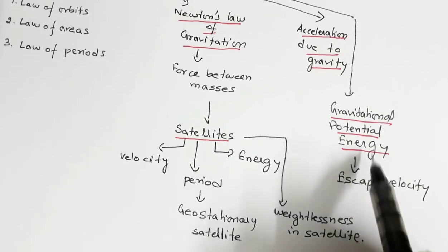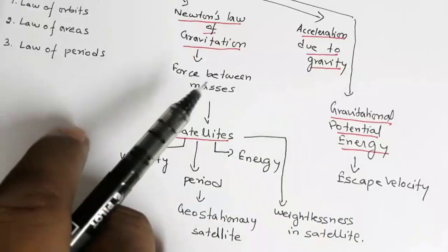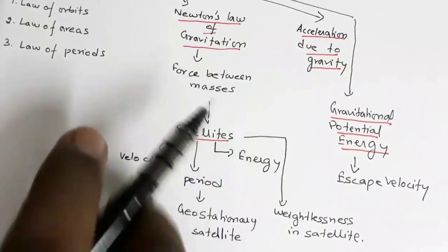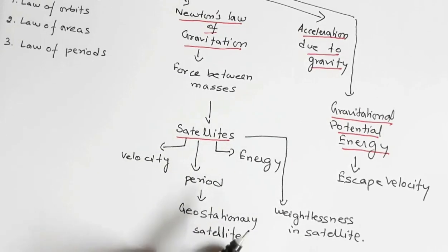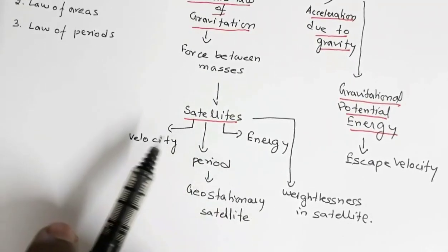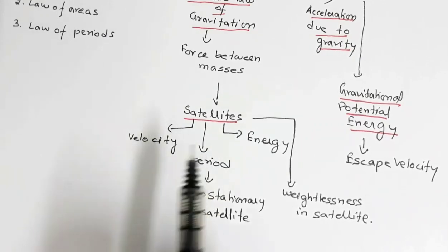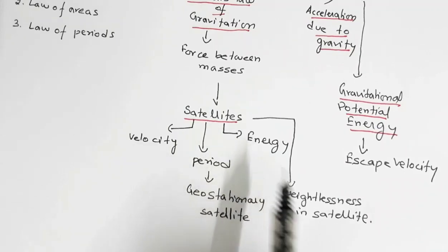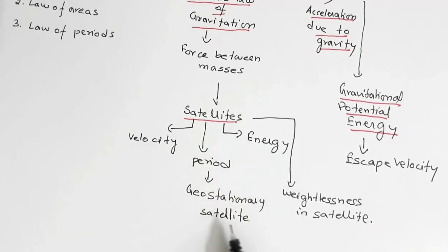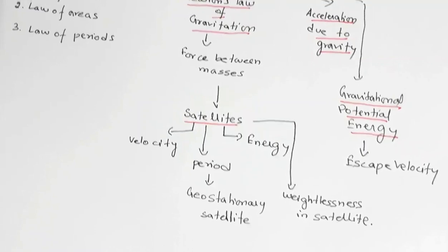Then we'll study gravitational potential energy, and lastly, escape velocity. From the force between masses we'll proceed to the topic of satellites — we'll study with what velocity the satellite must be projected so that it starts revolving around the Earth, calculate its period, and also its energy. Then we'll learn about geostationary satellites and weightlessness inside a satellite. These are the things we'll be studying in the chapter gravitation.